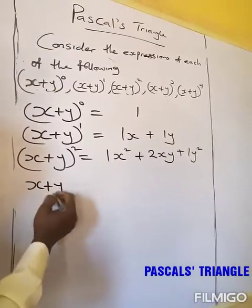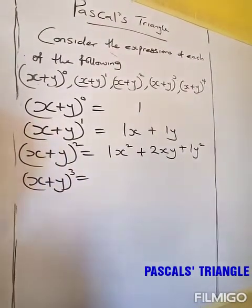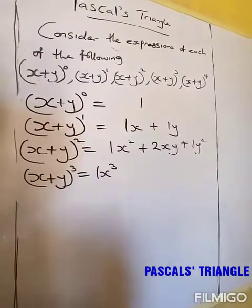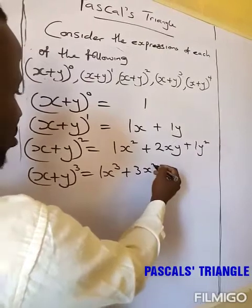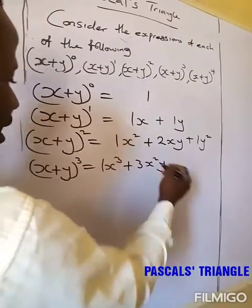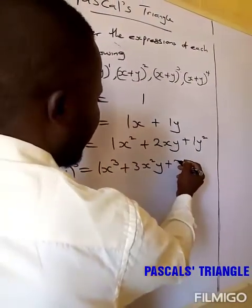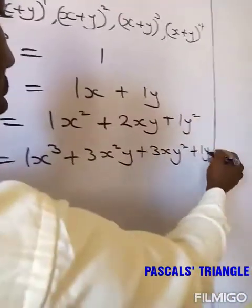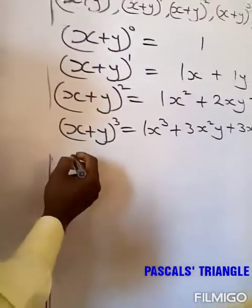The next one, which is (s + y) raised to 3. We are getting 1s raised to 3, plus 3s·y raised to 2, plus 1y raised to 3.